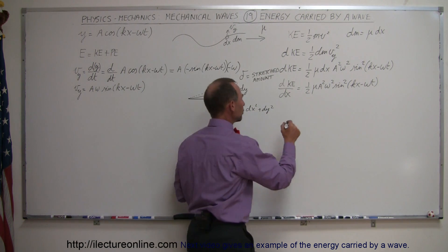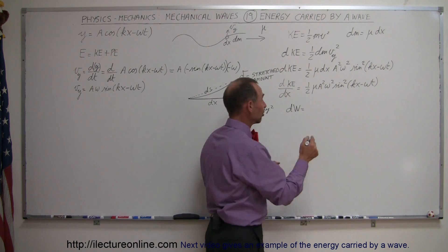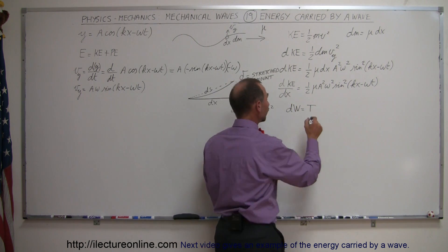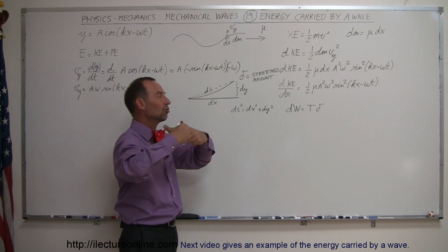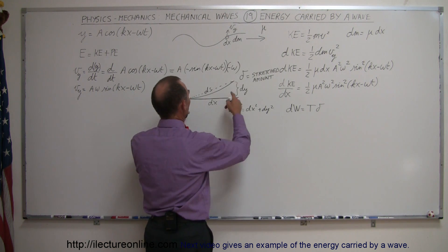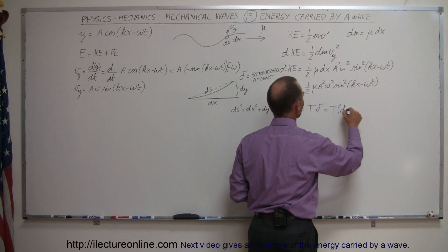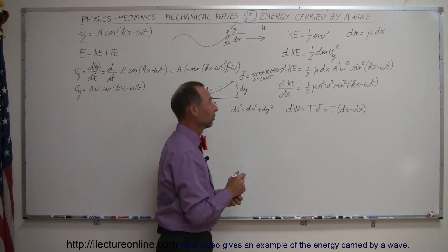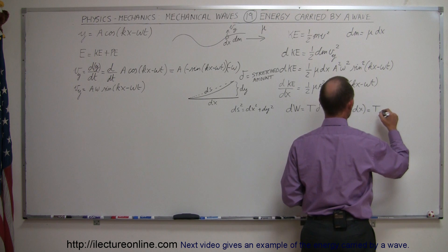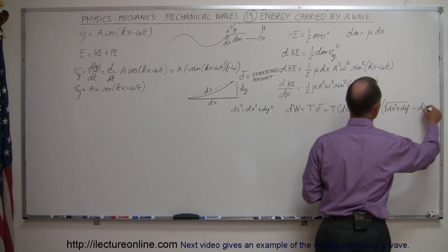How much work did we do? The small amount of work dW equals the force on the string — the tension T — times the displacement, which is delta, the amount of stretch. Force times distance is the work done, and that work equals the potential energy put into that segment. Delta is ds minus dx, so dW = T·(ds − dx). Since ds = √(dx² + dy²), we can write this as T times [√(dx² + dy²) − dx].